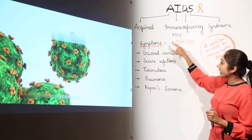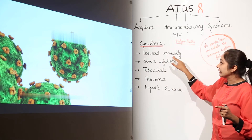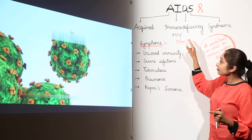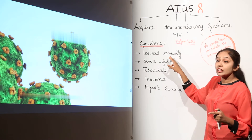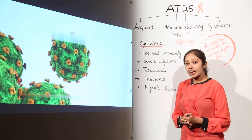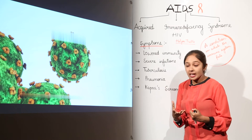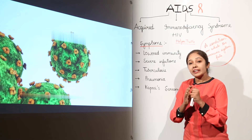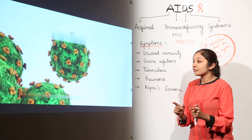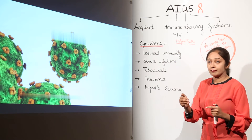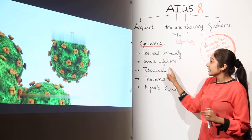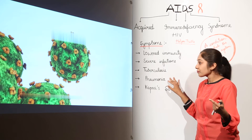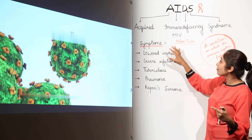What are the symptoms of AIDS? The first symptom is lowered immunity, since HIV attacks the immune system and causes immunodeficiency syndrome, lowering your body's ability to fight diseases and infections. There will be severe infections — even a small infection becomes very severe because the immune system is weakening. Tuberculosis and pneumonia, which are respiratory diseases, are also main symptoms of AIDS.